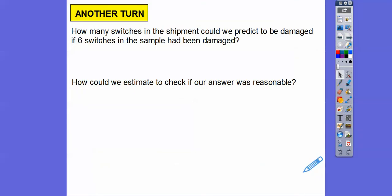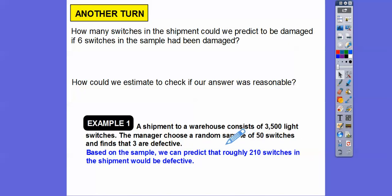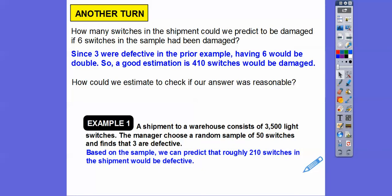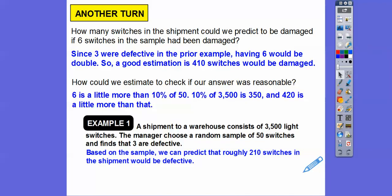How many switches could we predict are damaged if it was six switches defective in the sample instead of three? If still 50 in the sample and six are defective, since three defective gave us 210, six is double three — so we can double that 210. A good estimation would be 420 switches damaged. To check if our answer is reasonable: six is a little bit more than 10% of 50, since five is 10% of 50. 10% of 3,500 is 350, and a little bit more than that is 420. So that's a nice estimate to confirm we were correct. I hope that makes sense — take care.